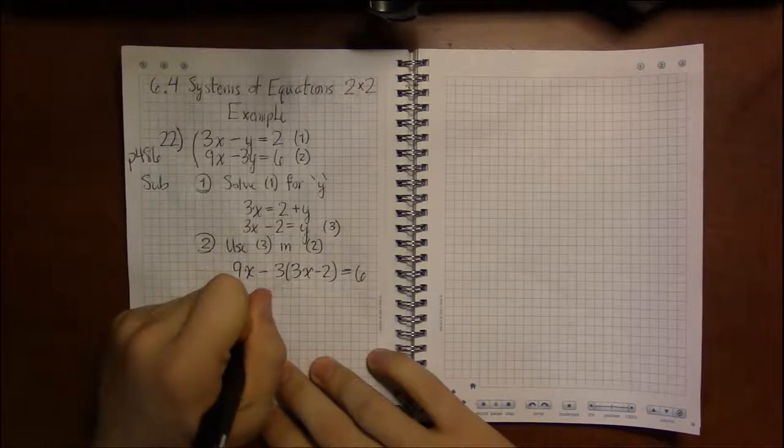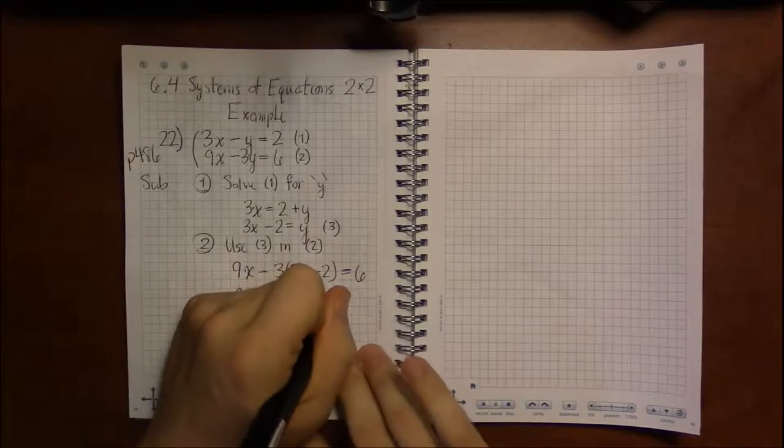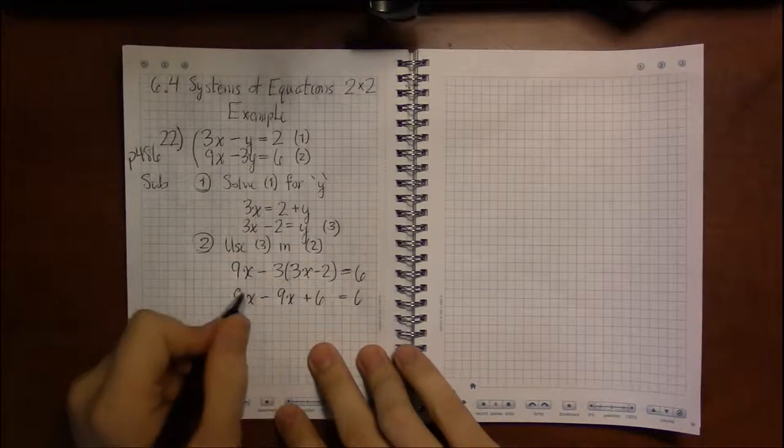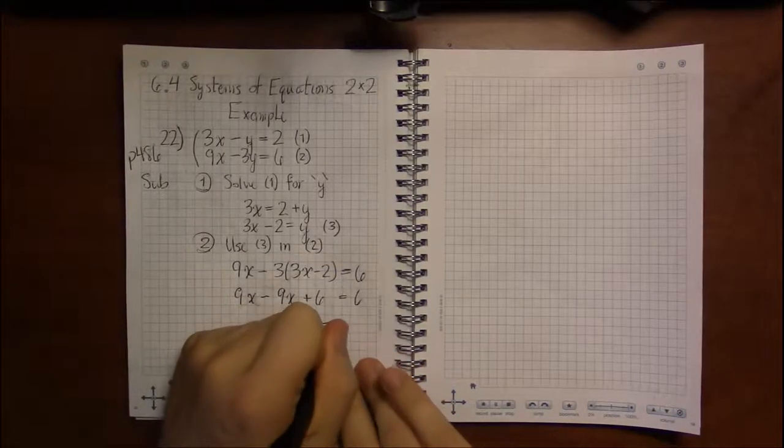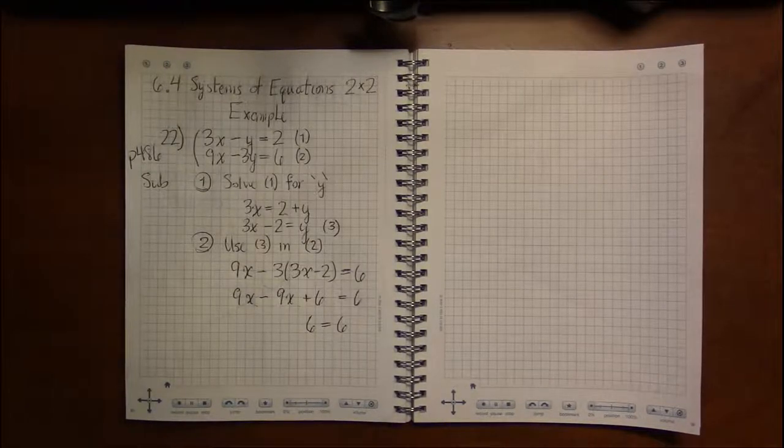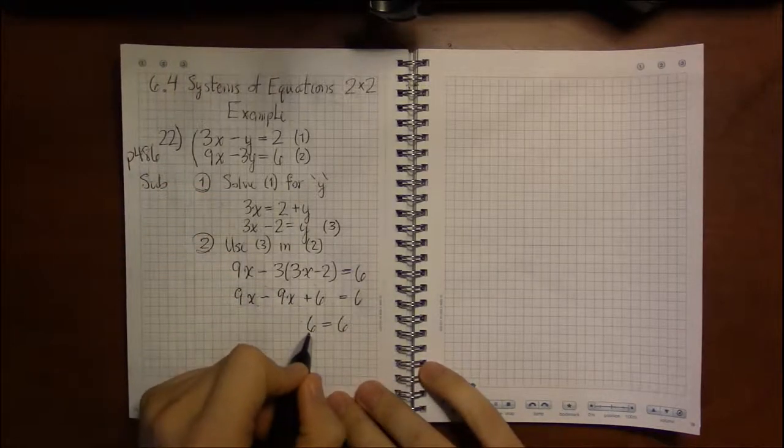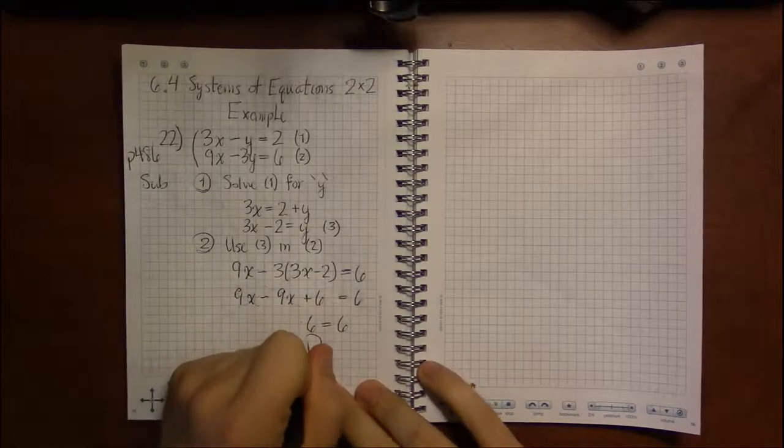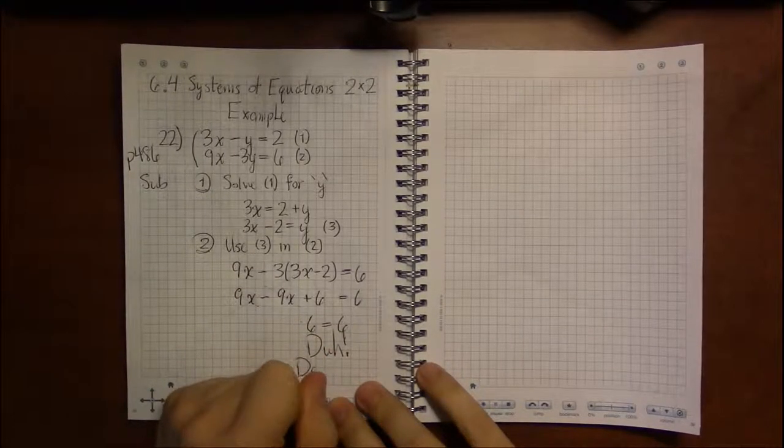And I know how to solve equations like this when they just have x's in them. So I've boiled this down to a problem I know how to solve. So let's see: 9x - 9x is 0, those x's cancel, and so I'm left with 6 = 6. Well yeah, no kidding. Ask a second grader, they know that. When you come down to a clearly true statement, what you have is a dependent system.